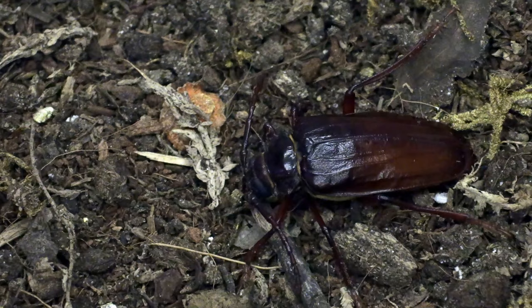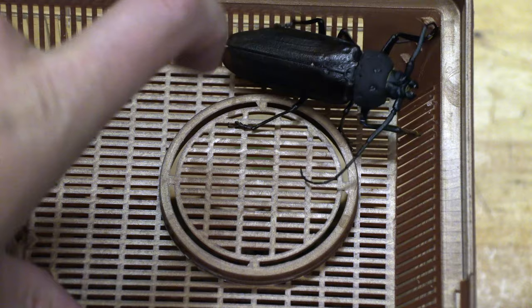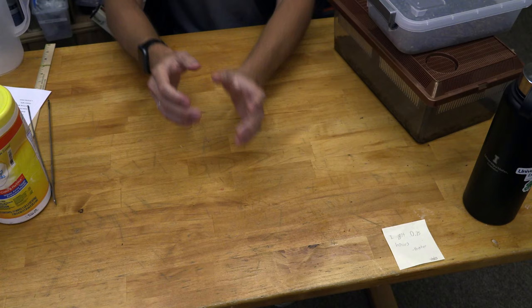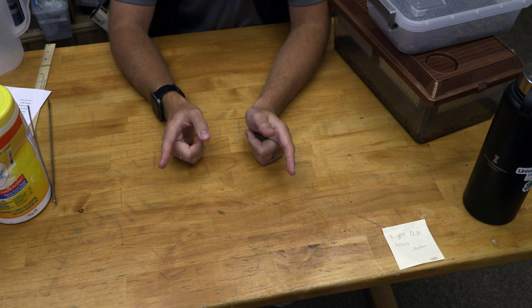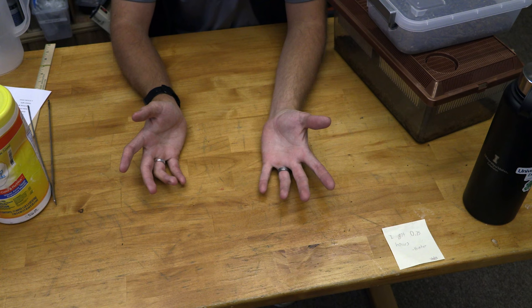Now these are both types of longhorn beetles and they get this name from those really long antennae which stretch out really far, so that's a key signature trait of this family of beetles. Both specimens I'm going to show you today were found by some homeowners who thought they were big and threatening and scary, so they gave them to me to identify.